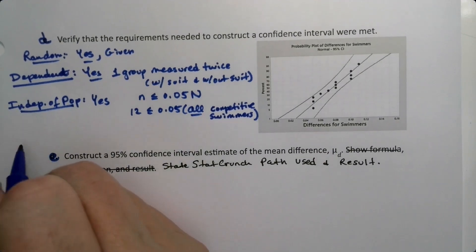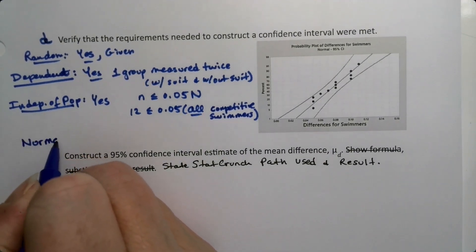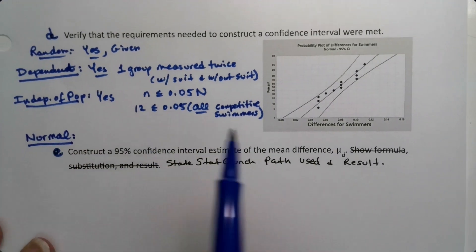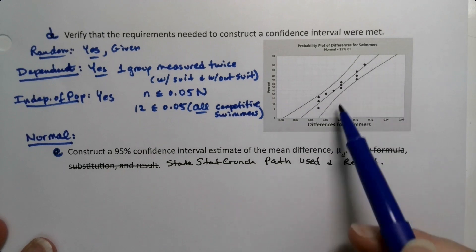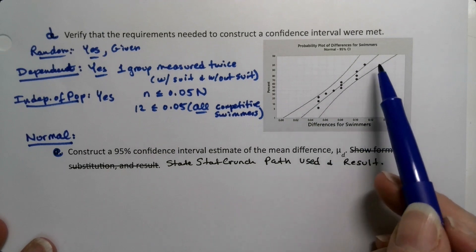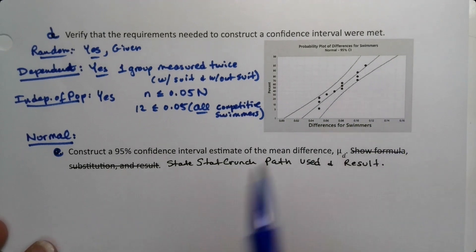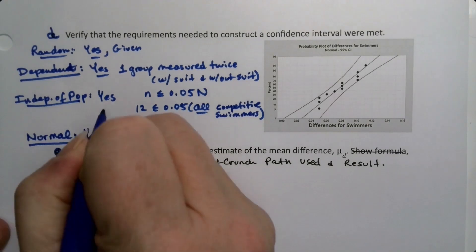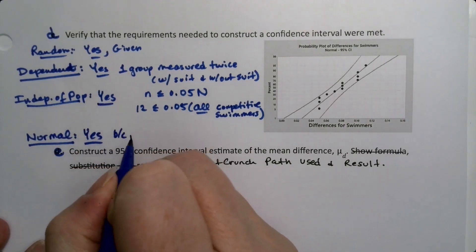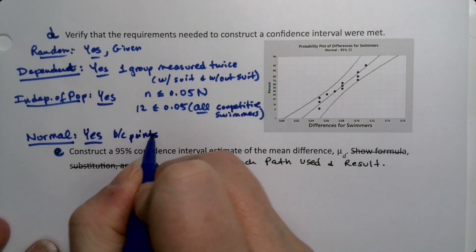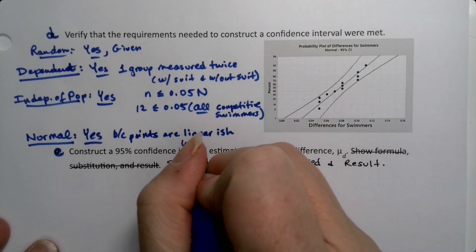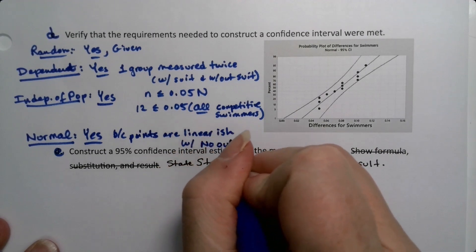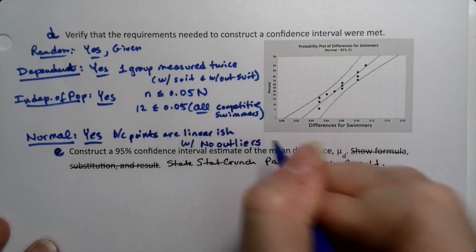The last bit would be normal. We don't have a sample size that's bigger than 30, but we can see that these points are all inside those two boundary lines, so these points are linear-ish and there's no outliers. This is a yes because the points on the graph are mostly linear-ish with no outliers.